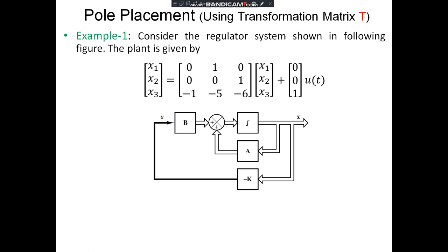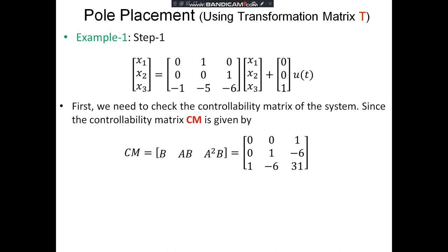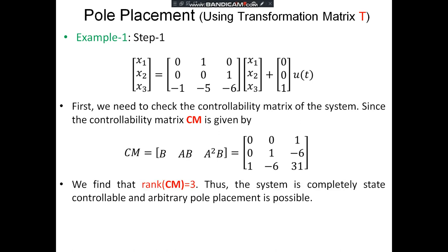Let us work through an example. Consider the regulator system where the plant is X-dot = AX + BU, using state feedback control U = −KX. The desired eigenvalues μ₁, μ₂, μ₃ are given; determine the state feedback gain matrix K. Since the system is third order, the controllability matrix has elements [B, AB, A²B]. The rank of the controllability matrix is 3, therefore the system is completely state controllable and arbitrary pole placement is possible.